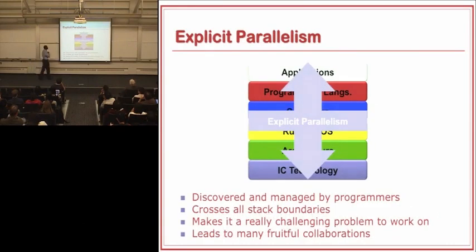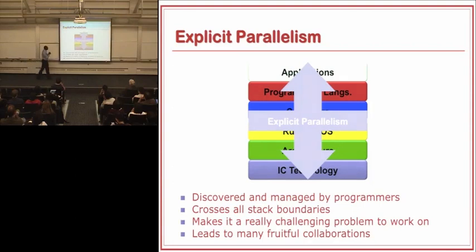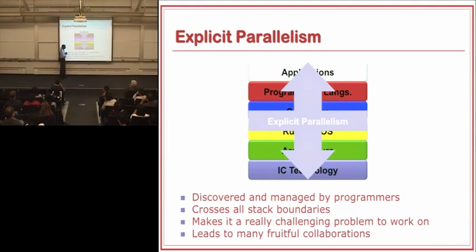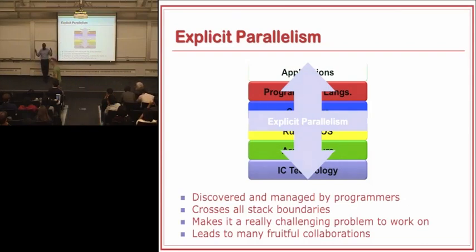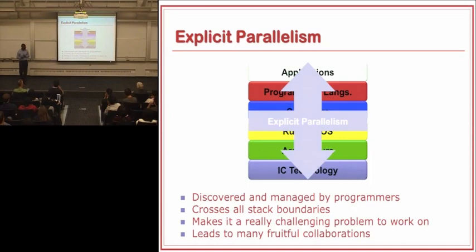This is especially true with explicit parallelism — parallelism managed and orchestrated by the programmer, not automatically created under the hood. It crosses all of the stack boundaries, making this a really challenging problem. There are trade-offs to be made between the different layers, and figuring out how to make these trade-offs correctly is pretty challenging. But the benefit is that as a researcher, you can't be an expert in all the different layers, so you need to reach out to colleagues who are expert, leading to lots of interesting and fruitful collaborations.